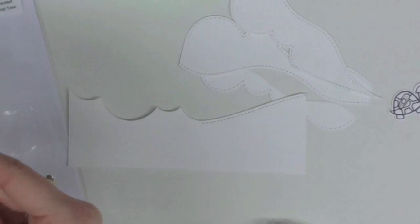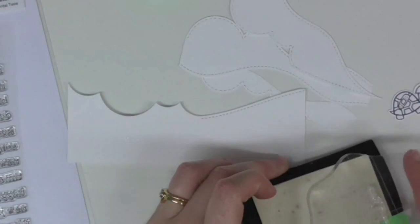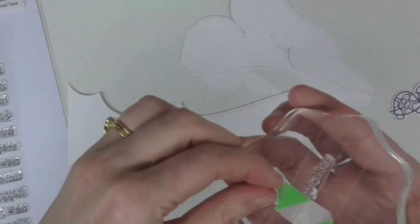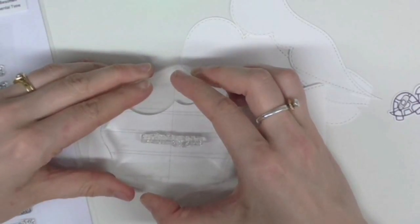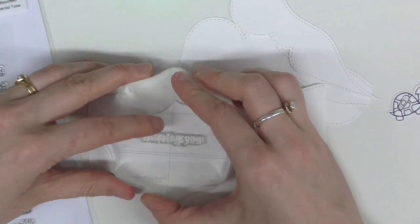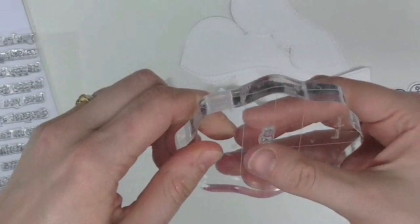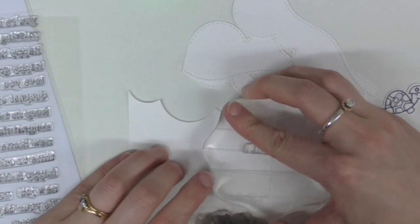So just a note to you guys, this is actually a stamp set by Clearly Besotted, it's called Sentimental Type. It's pretty new to my stash but I love it already because there's so many different great sayings in there, and it's quite a basic font, nothing too fancy. But you can make a lot of words out of it and this is one of my favorite techniques to do to make sure that I get more mileage out of my stamps.